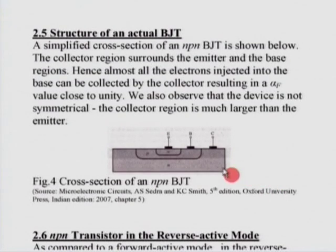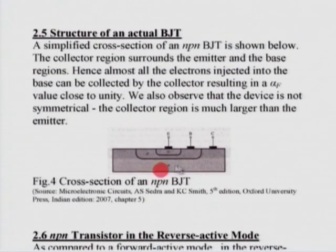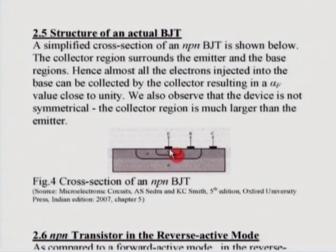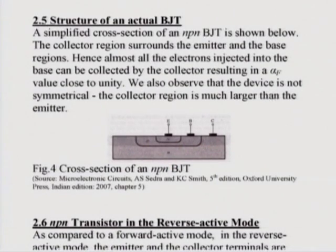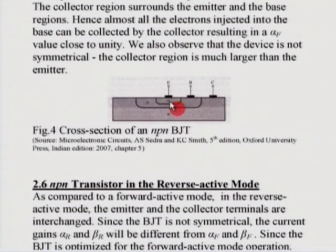Since we have studied the forward active mode in some detail, let us look at the actual structure of a BJT. Figure 4 shows the typical cross section of an NPN transistor. The outer portion is the collector. The emitter is surrounded by the base, which is surrounded by the collector. The collector is the largest region, and this structure ensures that almost all the electrons injected into the base get collected. Even though both emitter and collector are N-type semiconductor material, their actual areas are very different.